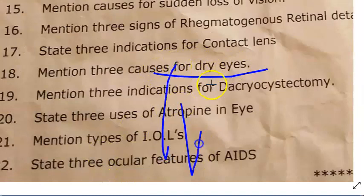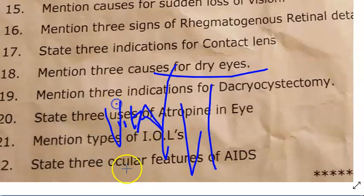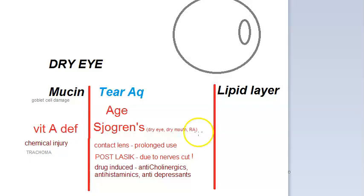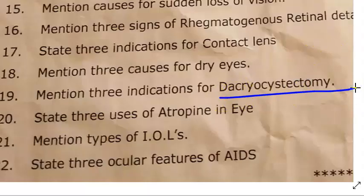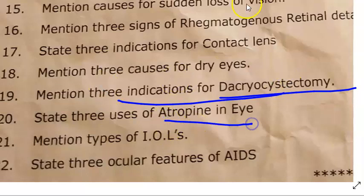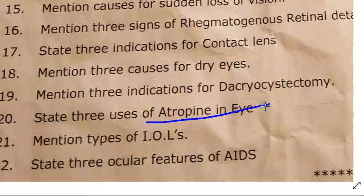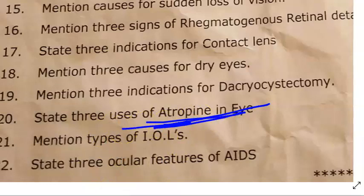Major causes of dry eyes: based on layers of the tear film — vitamin A deficiency, keratoconjunctivitis sicca, prolonged contact lens wear, chemical injury, trachoma, and drug-induced causes. Dacryocystectomy instead of DCR: when the patient has a fibrotic sac, tuberculosis, syphilis, or bone disease. Uses of atropine in the eye: as a cycloplegic for anterior uveitis pain or corneal issues, and as a mydriatic.